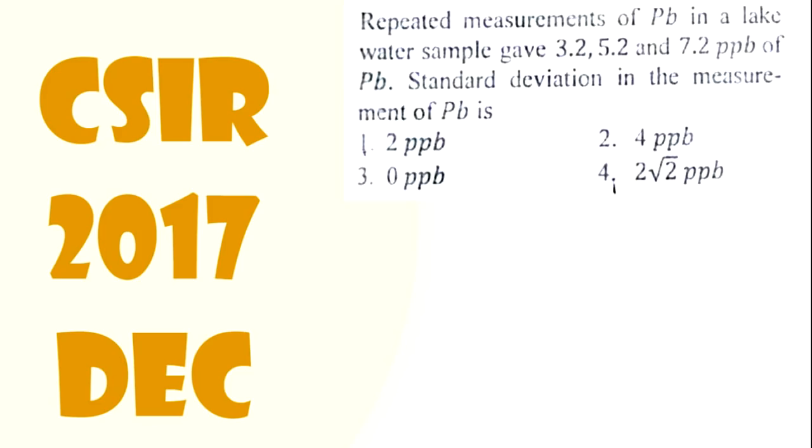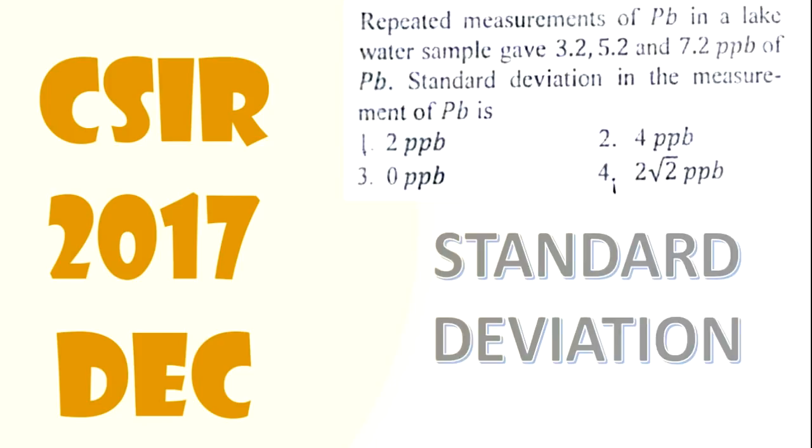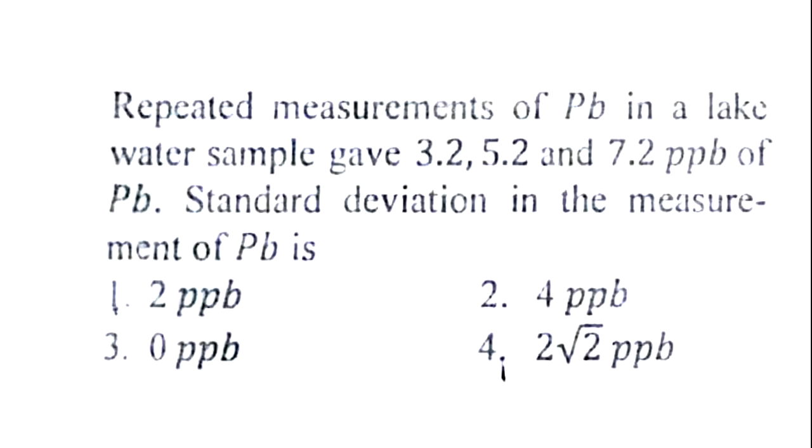This was a question asked in 2017 December in part B based on standard deviation. The question is: repeated measurements of Pb, that is lead, in lake water samples gave 3.2, 5.2, and 7.2 ppb, that is parts per billion of lead. The standard deviation in measurement of Pb is, options are given.